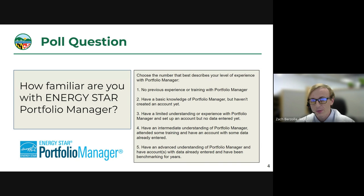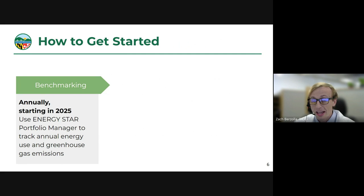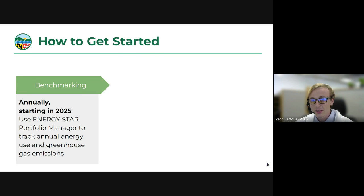So why are we talking about Portfolio Manager and benchmarking? Per the proposed building energy performance standard regulation, starting in 2025, owners of covered buildings will be required to report energy data to MDE through the Energy Star Portfolio Manager tool. Property and energy use data must be entered into Portfolio Manager before June 1st, 2025. Every year starting in 2025 by that June 1st deadline, you must enter data to track your annual energy use and greenhouse gas emissions. The good news is there are over 4,000 buildings already benchmarking in the state.